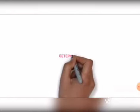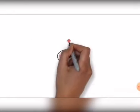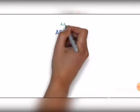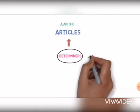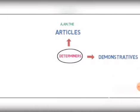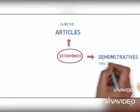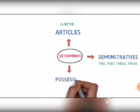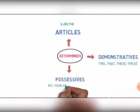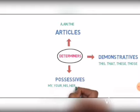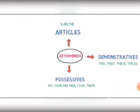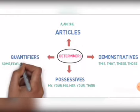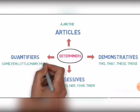Determiners are basically divided into four types. First, articles, which are a, an, the. Second, demonstratives, which are words like this, that, these, those. Third, possessives, which are words like my, your, his, her, our, their. And fourth, quantifiers, which are words like some, few, little, many, much, any.